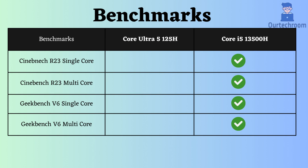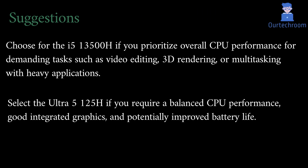Furthermore, if you compare benchmark results such as Geekbench V6 and Cinebench R23, the Core i5-13500H demonstrates superior performance. If you seek my recommendation, choose the i5-13500H if you prioritize overall CPU performance for demanding tasks such as video editing, 3D rendering, or multitasking with heavy applications. Select the Ultra 5 125H if you require balanced CPU performance, good integrated graphics, and potentially improved battery life.